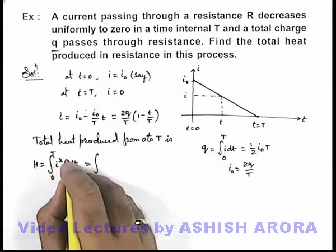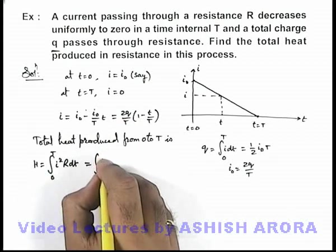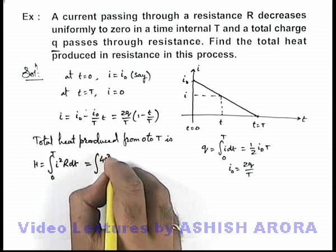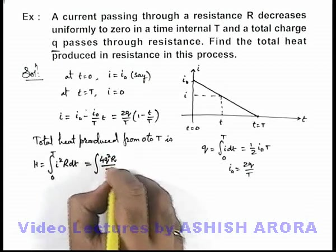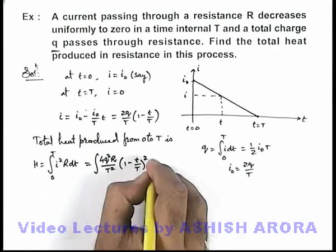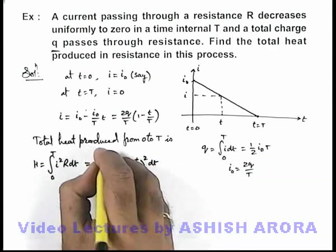If we substitute the value of i over here, this will be integration of i²R. This can be written as i² R, which will be (4q²R/T²)(1 - t/T)² dt within limits from zero to T.